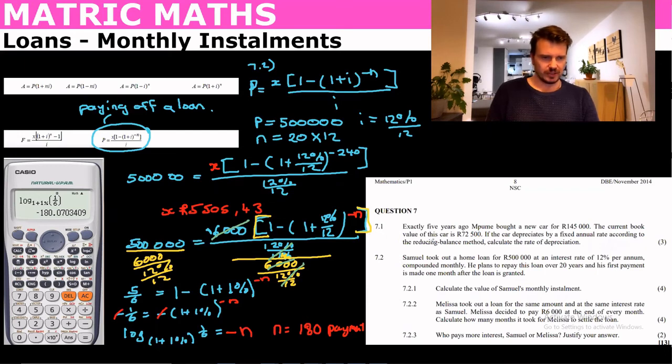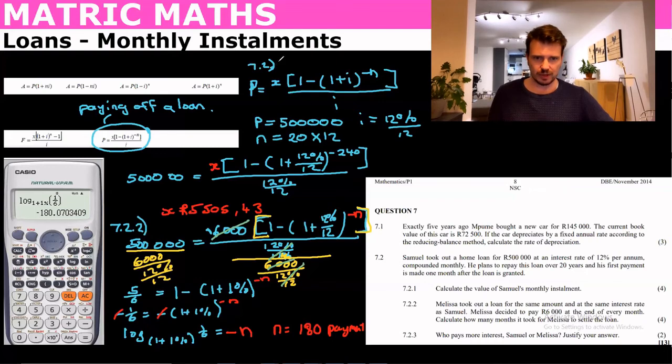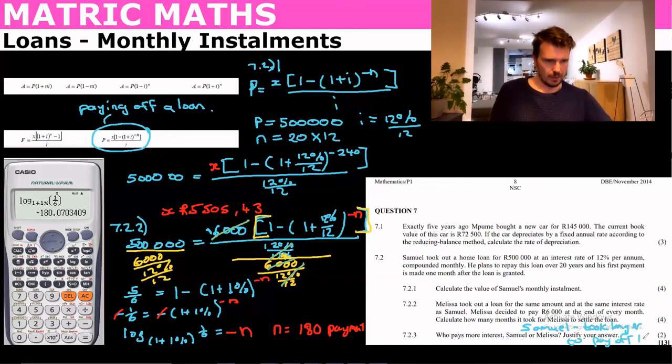So then the final one is who pays the most interest. Well, I'm not going to work it out because it's only for two marks. Who paid it off sooner? Melissa. So she paid less interest because remember when you pay something off sooner, you pay less interest. So 7.2.2 is the one that we started here, this was 7.2.1 here. And we're just going to say, who pays more interest? Samuel. And the reason: took longer to pay. And time is money.